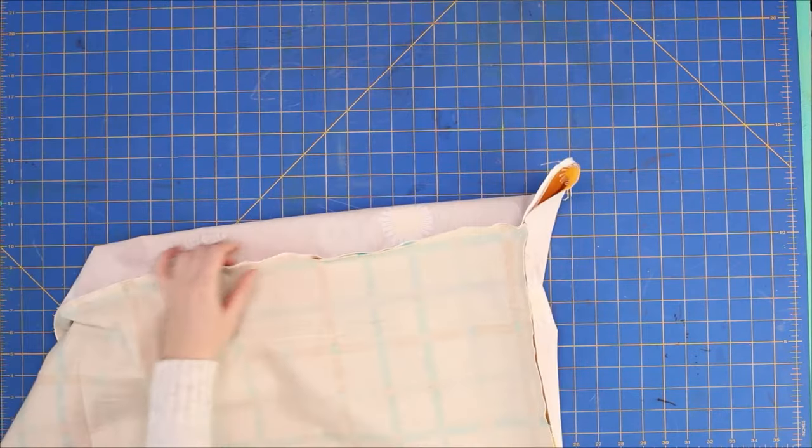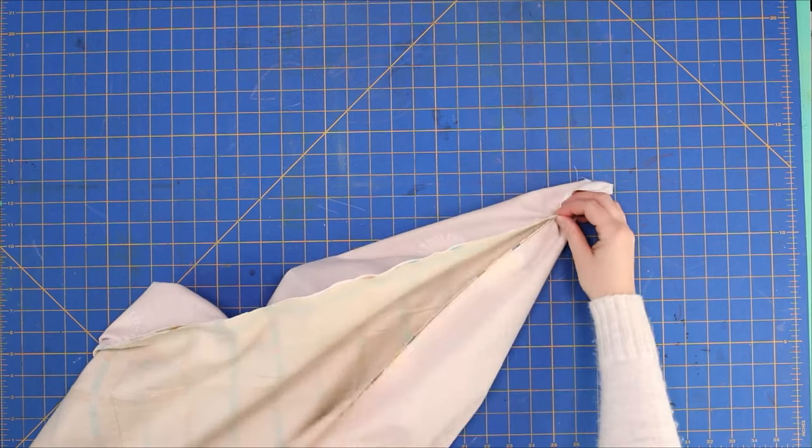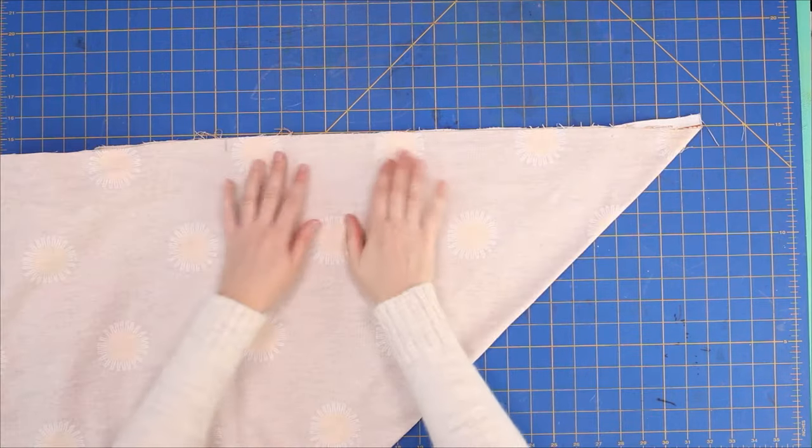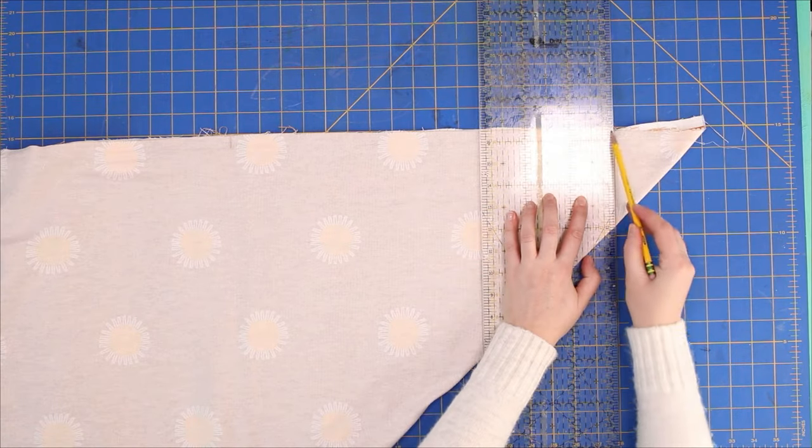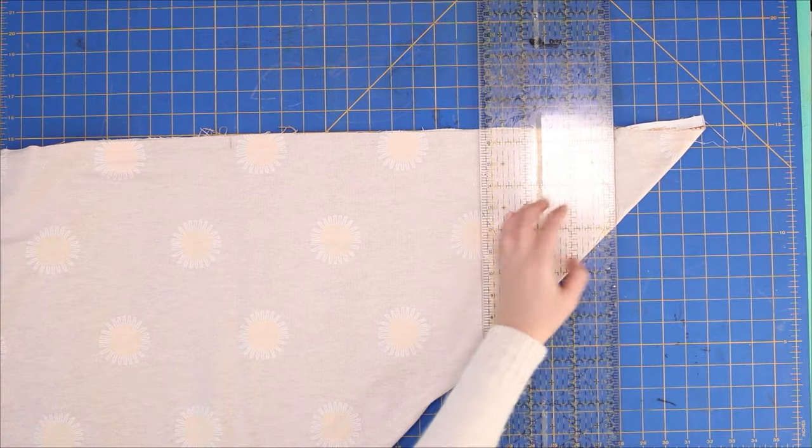Once all four sides are sewn together, take the blanket back to your cutting mat. Fold the edges into a triangle and smooth everything out. Now we need to mark a 45 degree angle from the innermost corner to the edge and there are two different ways you can do this.